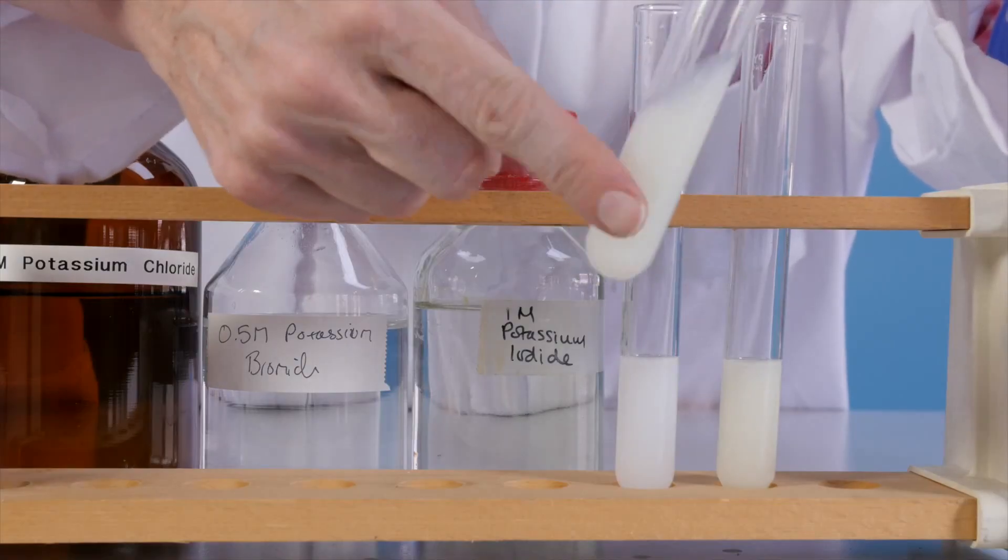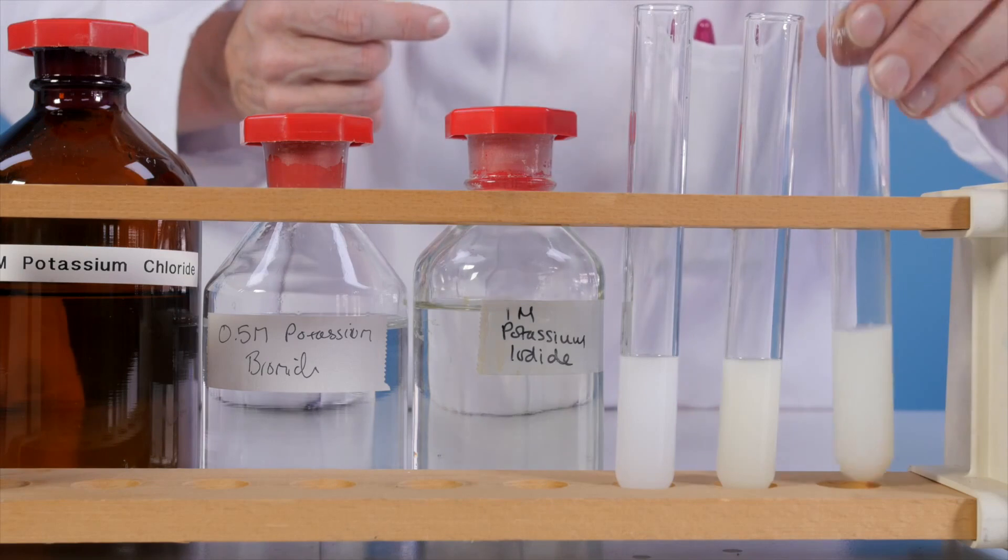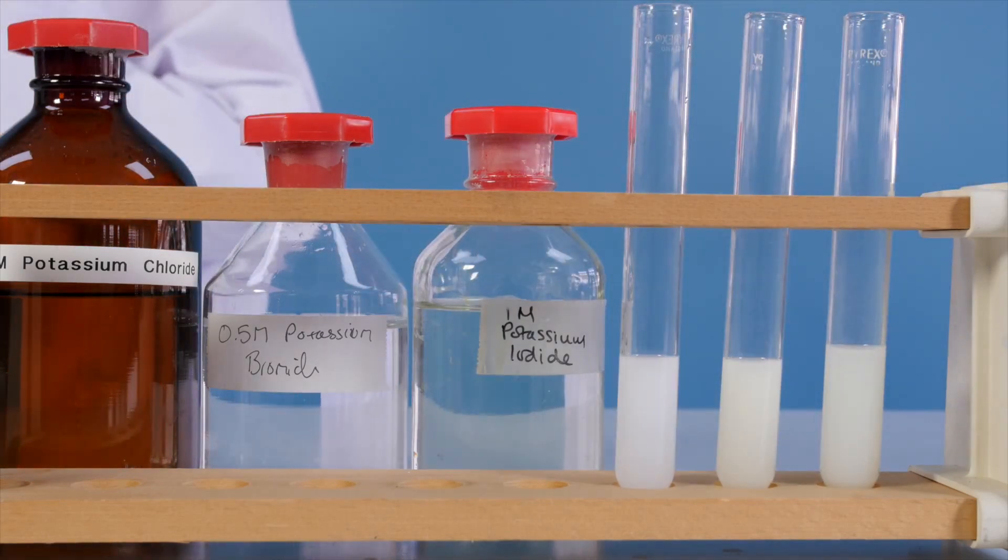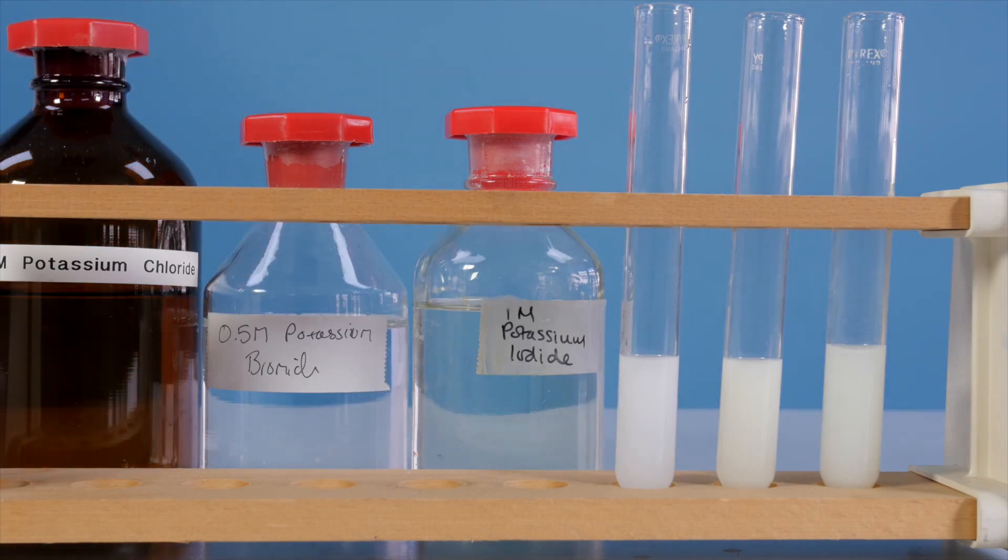Gently agitate each test tube and observe any precipitate that forms. In this case, a white precipitate forms with chloride ions, a cream precipitate with bromide ions and a yellow precipitate with iodide ions. Record your observations.